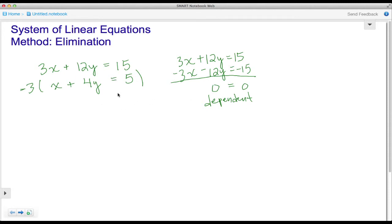Let's go ahead and prove that. Let's take the first equation, 3x + 12y = 15, and solve for y so that it's in slope-intercept form.